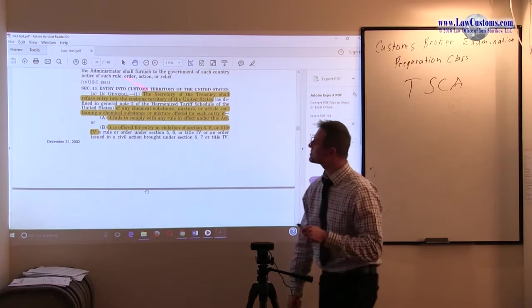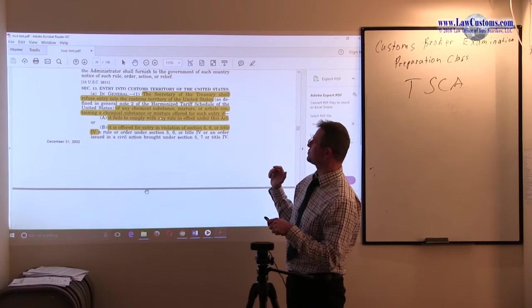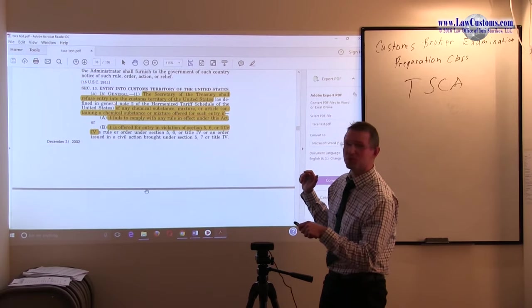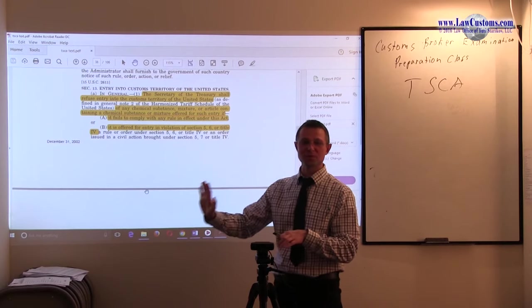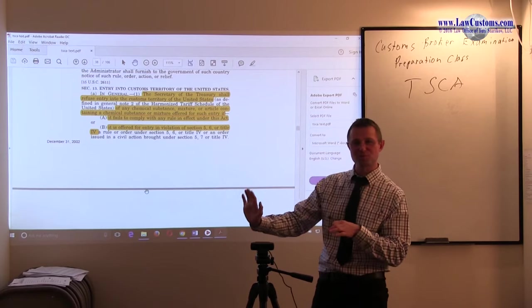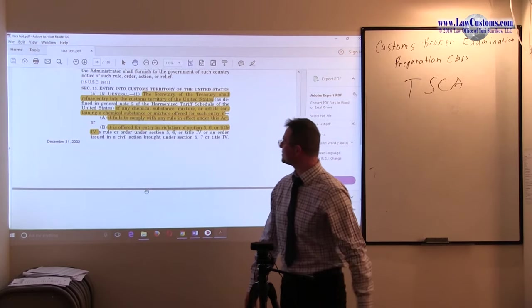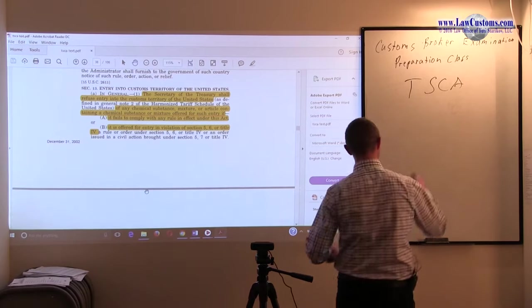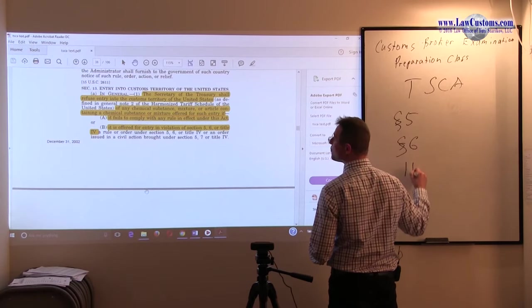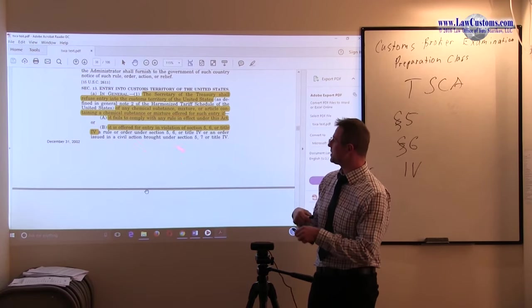Congress says if any chemical substance, mixture, or article containing a chemical substance or mixture is offered for entry, it shall be refused entry. You cannot declare it or clear it if it fails to comply with any rule under Section 5, Section 6, or Title 4.